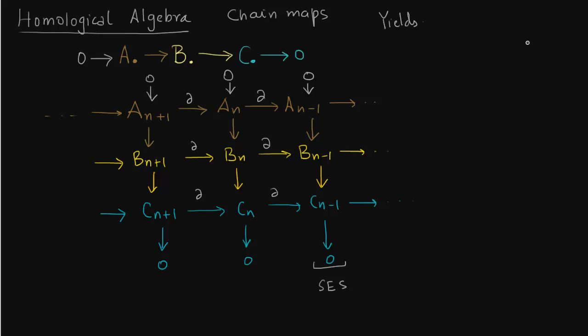So this chain map yields an exact sequence, a long exact sequence. So this long sequence does not have any homology groups. That is, the homology groups of this sequence are 0. This kernel is equal to image in this map.